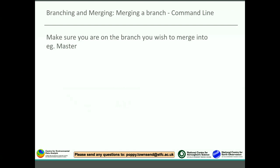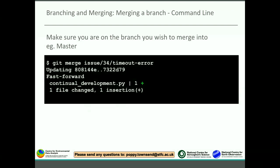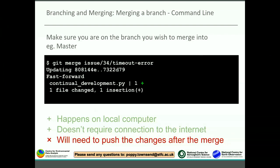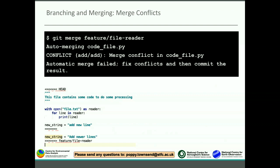To merge at the command line, first make sure you're on the branch you wish to merge into - for example, if merging into master, make sure you're on master. Then type git merge followed by the branch name you want to merge in. So if merging issue/34/timeout-error into master, type git merge issue/34/timeout-error. It will give a message saying it's done a fast-forward merge and updated the master branch. This happens on your local computer and doesn't require internet connection, but if you're using a remote repository like GitHub you'll need to push changes after the merge.